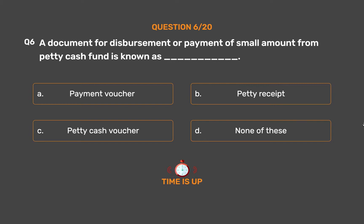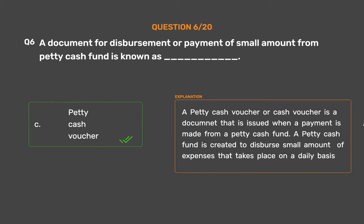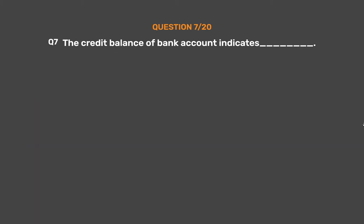The correct answer is option C: petty cash voucher. A petty cash voucher is a document that is issued when a payment is made from a petty cash fund. A petty cash fund is created to disburse small amounts of expenses that take place on a daily basis.